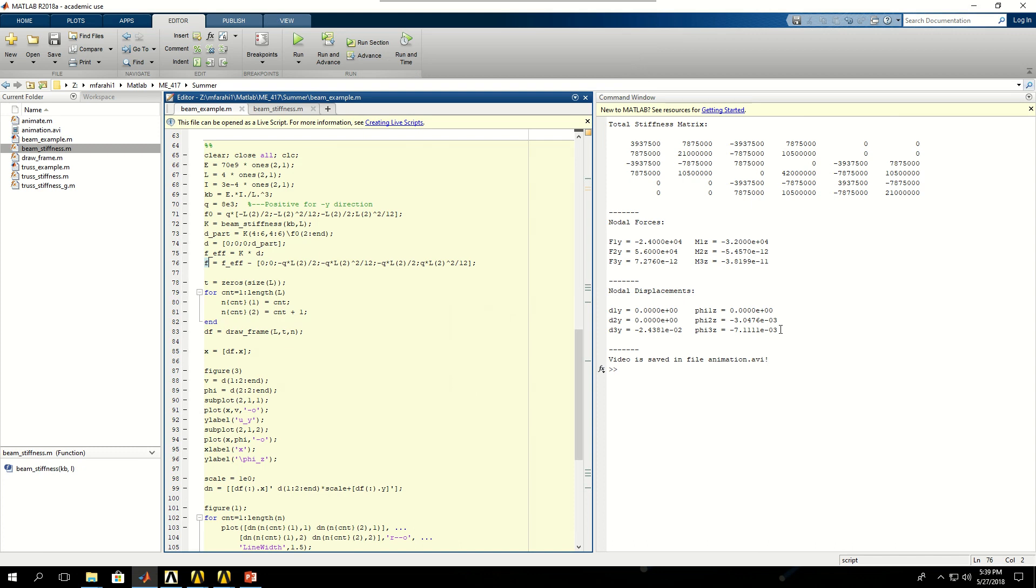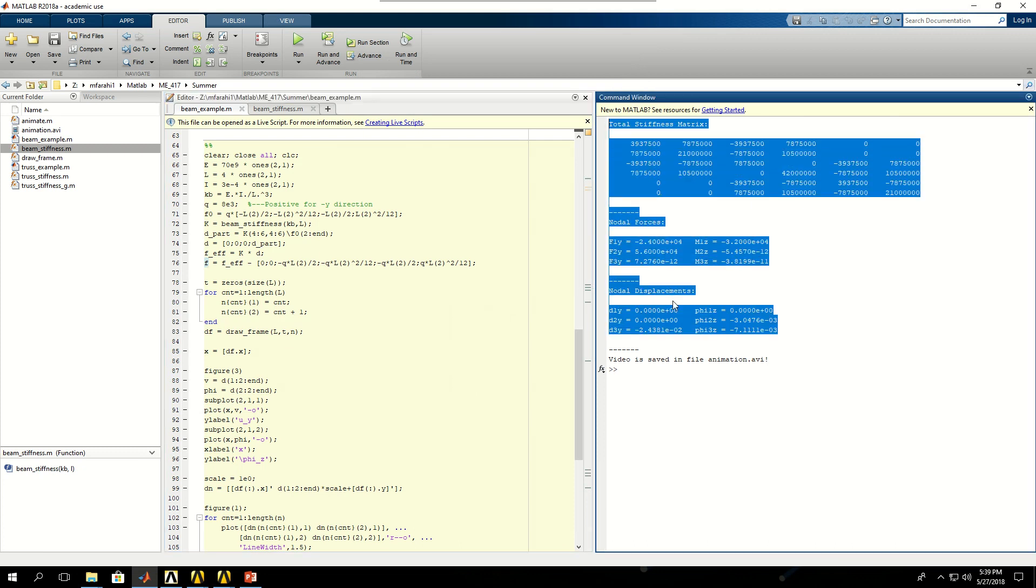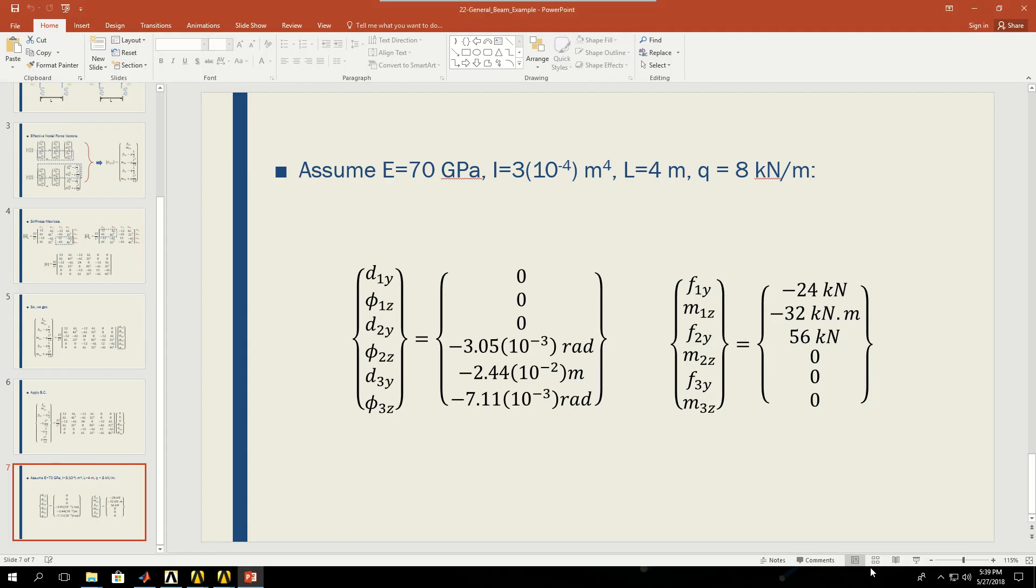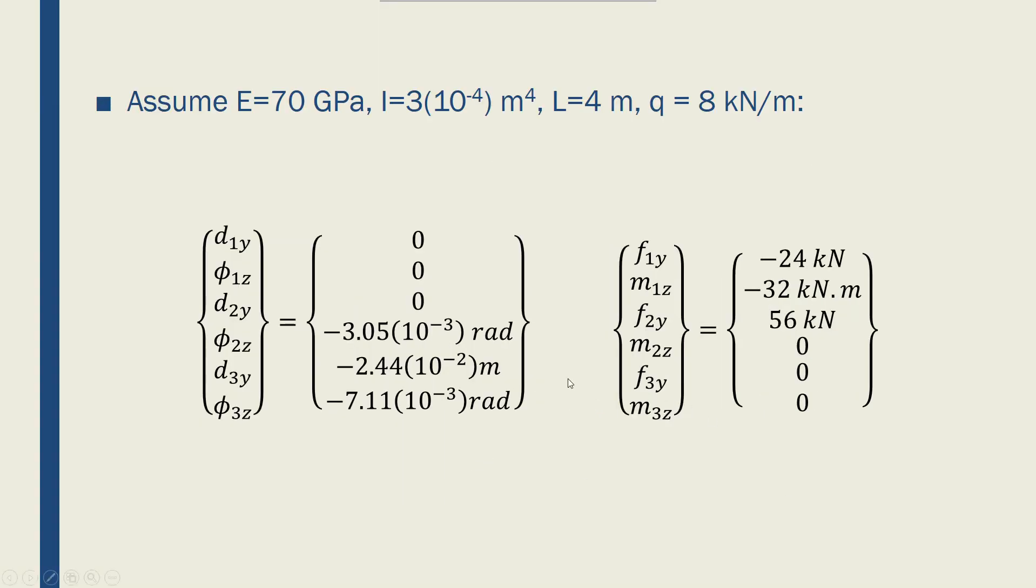These are the results that MATLAB prints out for me. I have the total stiffness matrix, the nodal forces, and the nodal displacements, which I have shown here. These are the forces and displacements. Fixed boundary condition at node 1, no displacement in y direction, but I have rotations and displacements in the other nodes. These are the forces and reactions which we have due to the distributed load applied to our beam. Thank you.